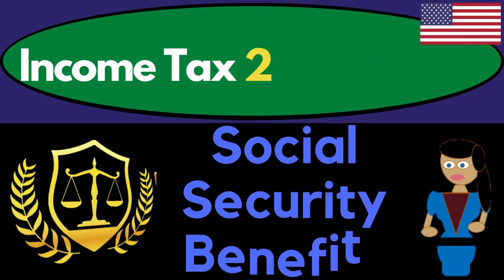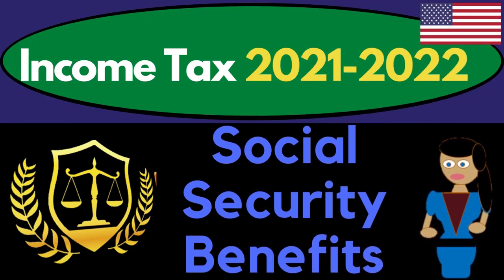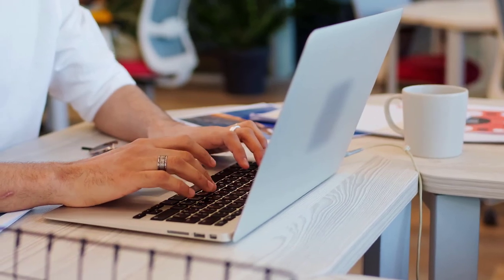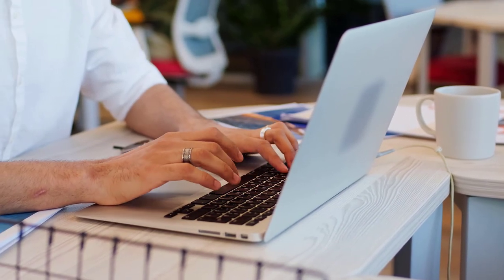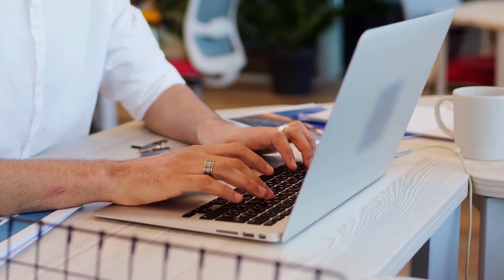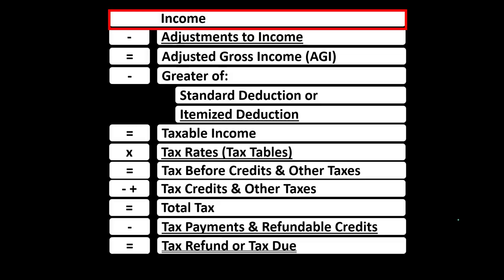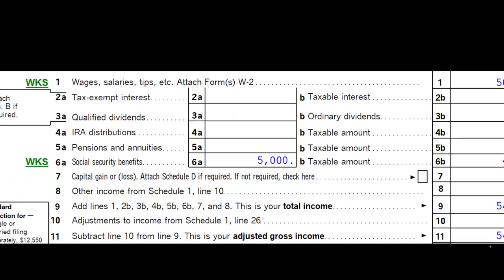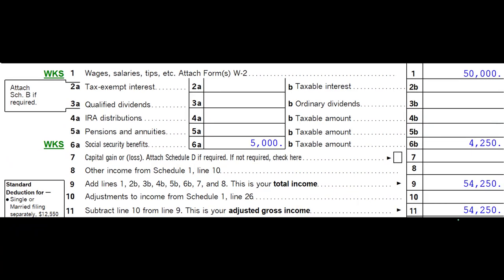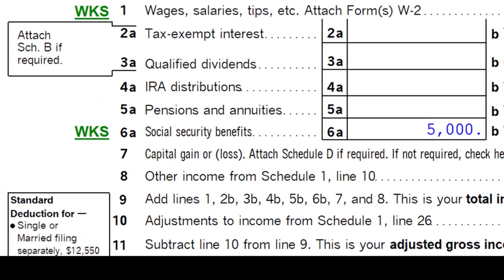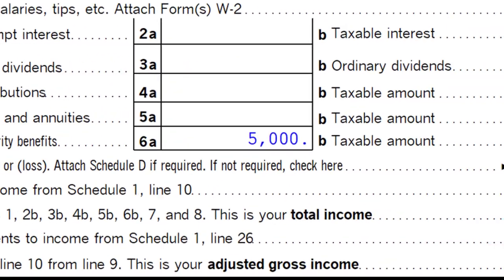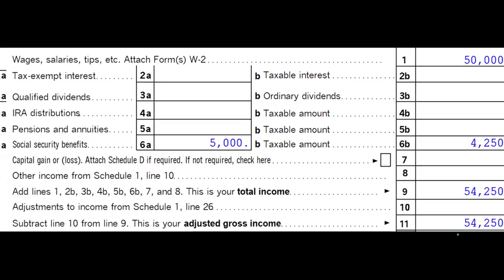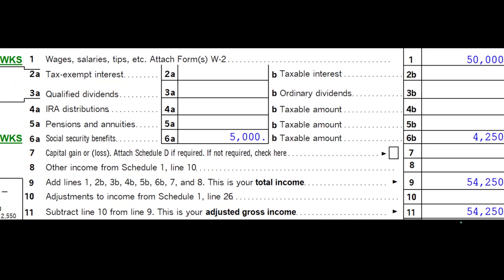Income tax 2021-2022 social security benefits — get ready to maximize refunds. Diving into income tax 2021-2022, here we are in our income tax formula, looking at the top line — the income line — on the first page of the 1040. We're looking at line 6: 6A being the social security benefits total, 6B being the taxable amount. Quick recap of social security in general.